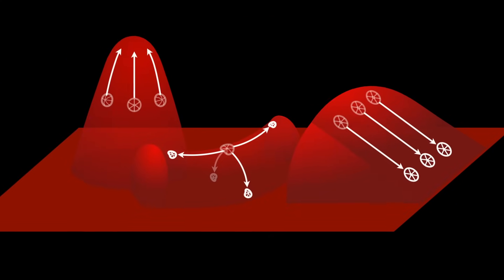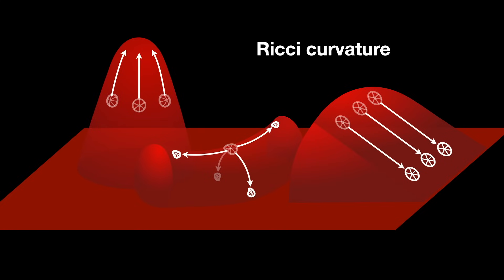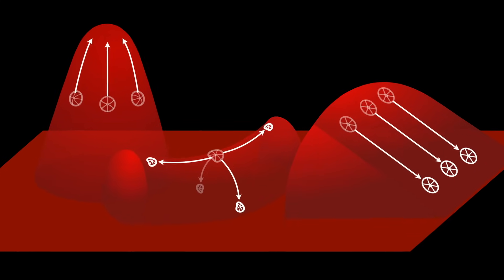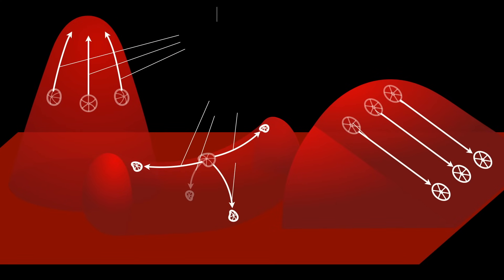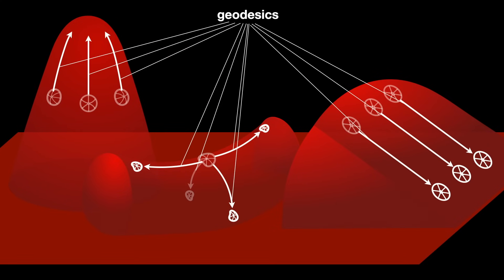Ricci Curvature is the tool that captures this. It tells you how volumes shrink or grow, how paths called geodesics bend together or drift apart. In physics, it connects mass and energy directly to the shape of spacetime. Ricci Curvature is more than math, it is how the universe keeps track of what is inside of it.